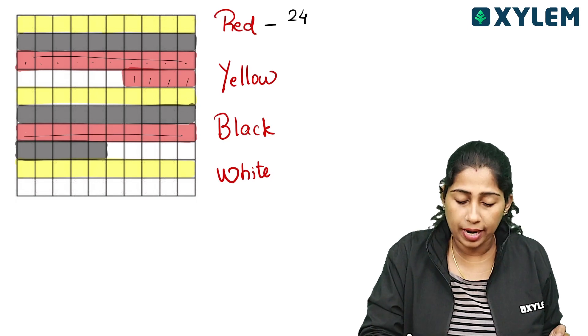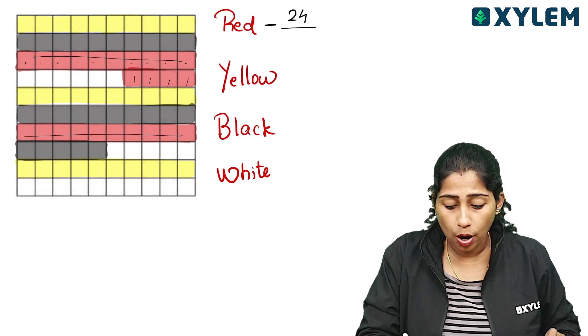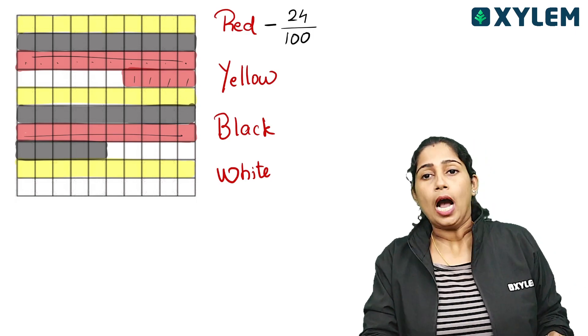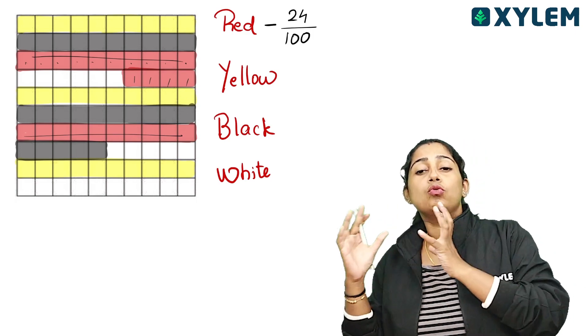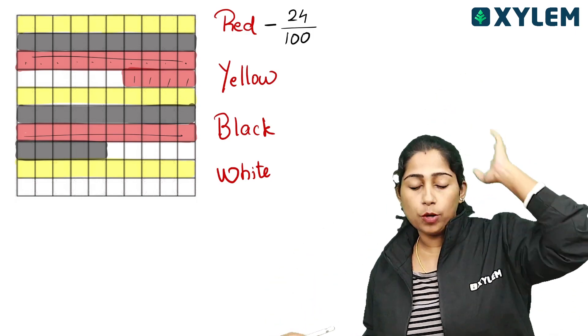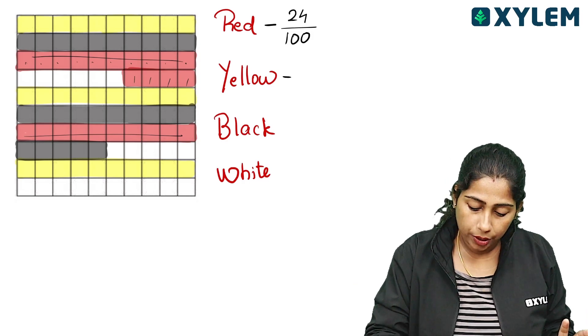There are 24 red boxes out of 100. How many blue boxes are there? We count 100 boxes.